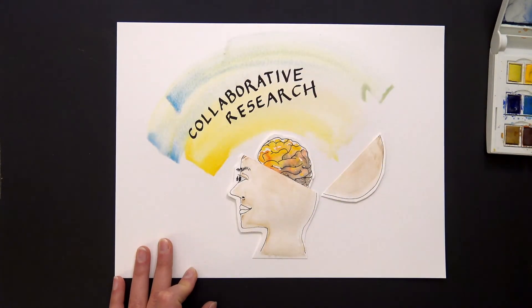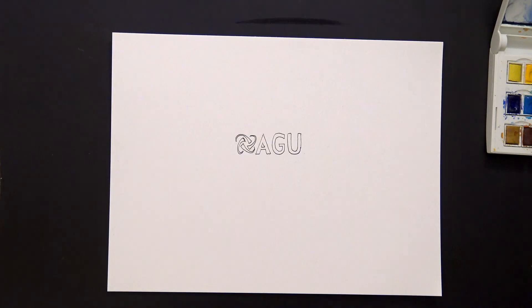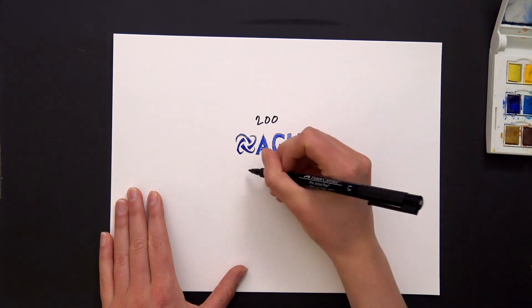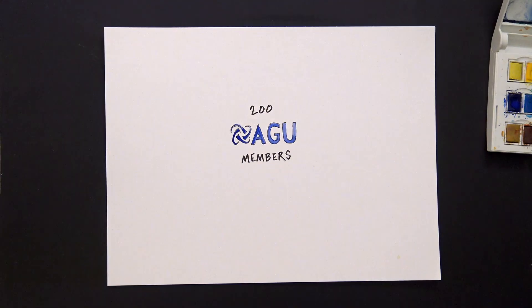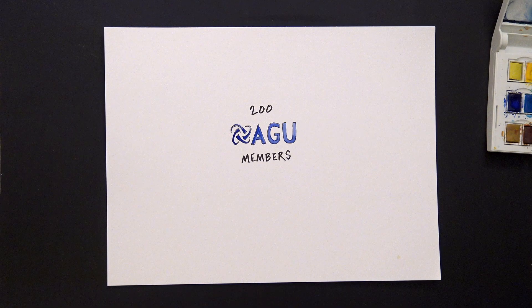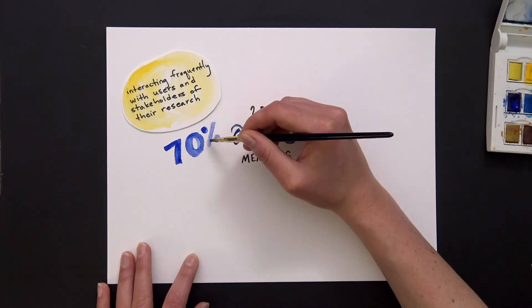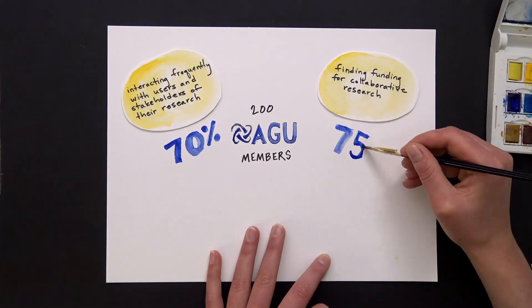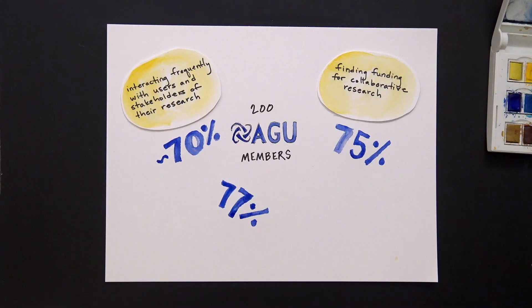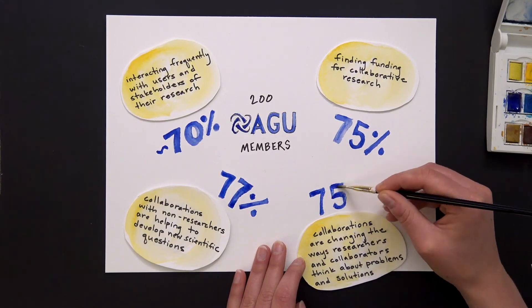We're starting to learn more from the experiences of Earth scientists doing collaborative research more broadly. From a recent survey of over 200 AGU members who have recently led or participated in a collaborative research project that involved users or stakeholders, a vast majority, that's 70% or greater, responded that they're interacting frequently with users and stakeholders of their research on quarterly intervals or more often. They're finding funding for collaborative research. Collaborations with non-researchers are helping to develop new scientific questions. And collaborations are changing the ways researchers and collaborators think about problems and solutions.